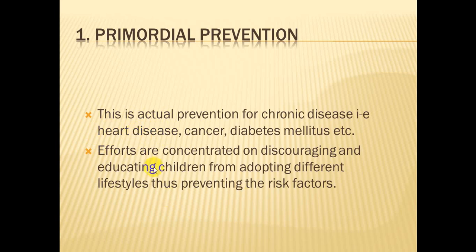If at this stage children and the population are discouraged from adopting this kind of lifestyle — which puts them at risk for disease — then every disease's risk factors can be reduced. So primordial prevention discourages people from adopting certain types of lifestyles, thus preventing the risk factors of the disease.